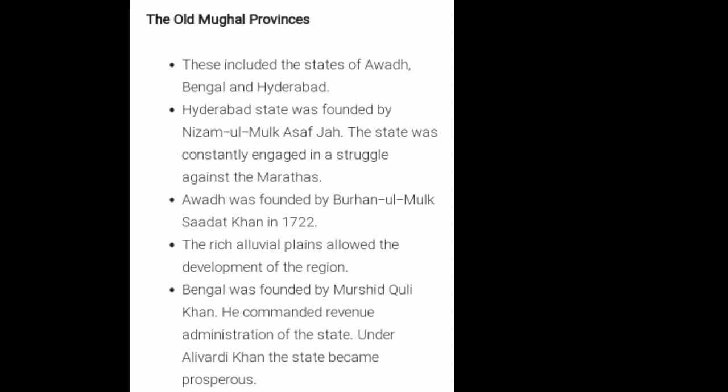The old Mughal provinces included Awad, Bengal, and Hyderabad. Hyderabad state was founded by Nizam-ul-Mulk Asaf Jah, and it was constantly engaged in a struggle against the Marathas. Awad was founded by Burhan-ul-Mulk Sadat Khan in 1722, and the rich alluvial plains allowed the development of the region. Bengal was founded by Murshid Quli Khan, who commanded the revenue administration of the state, and under Alivardi Khan the state became very prosperous.